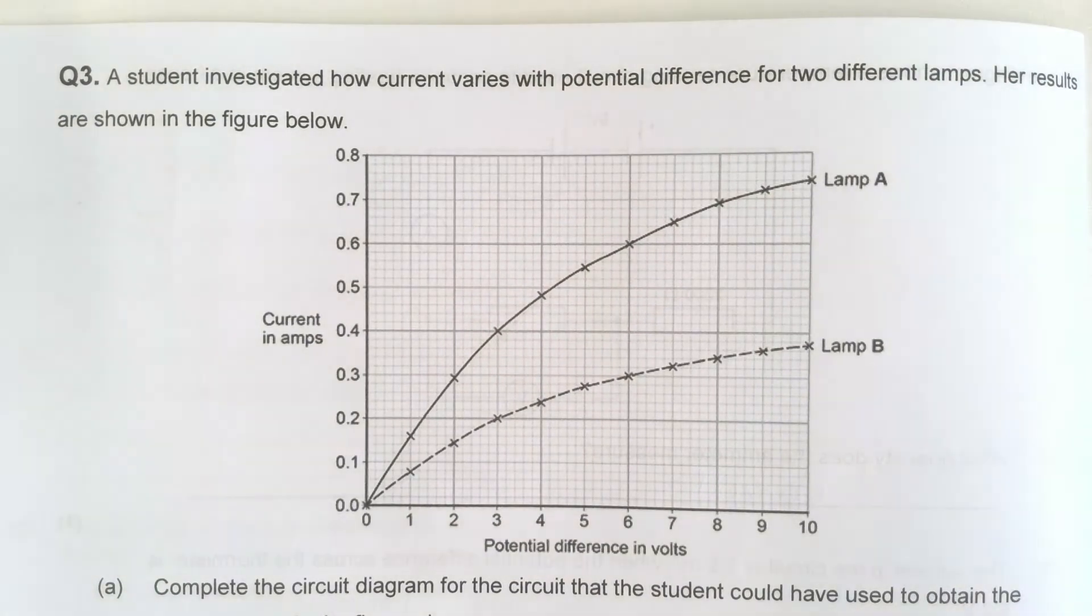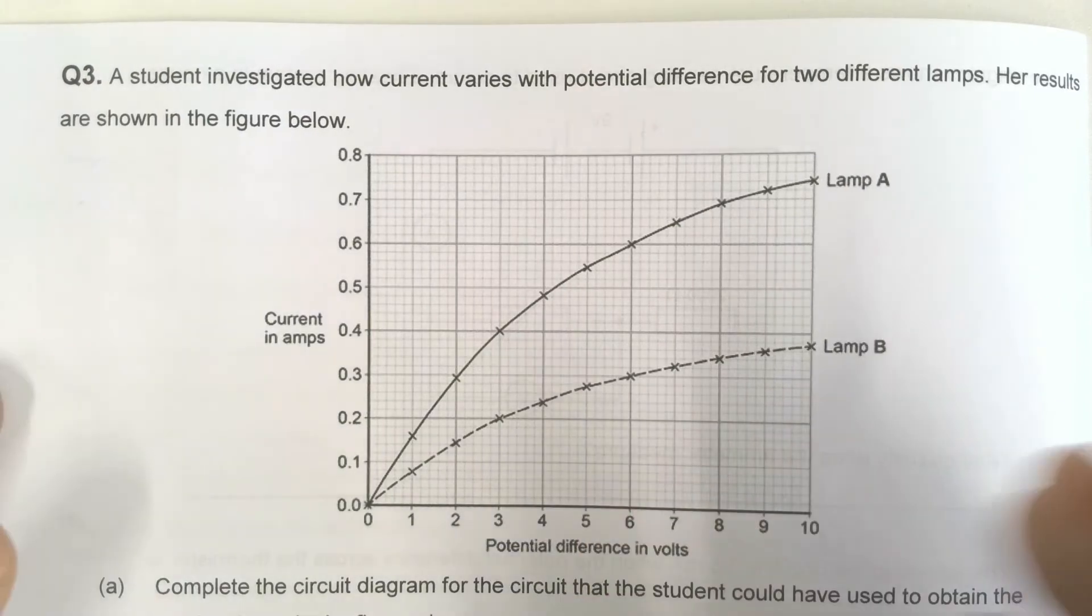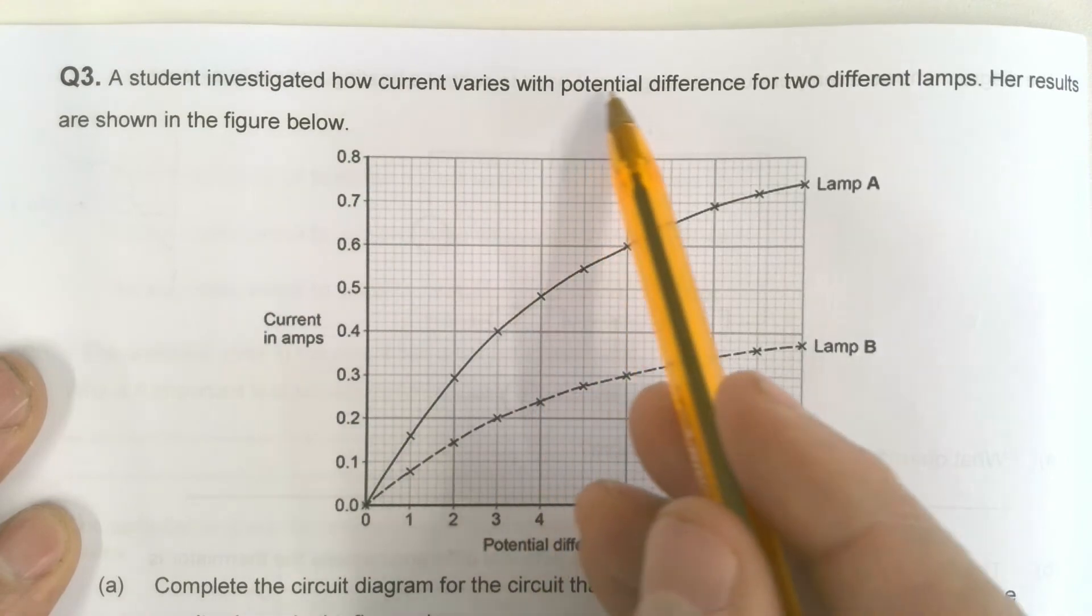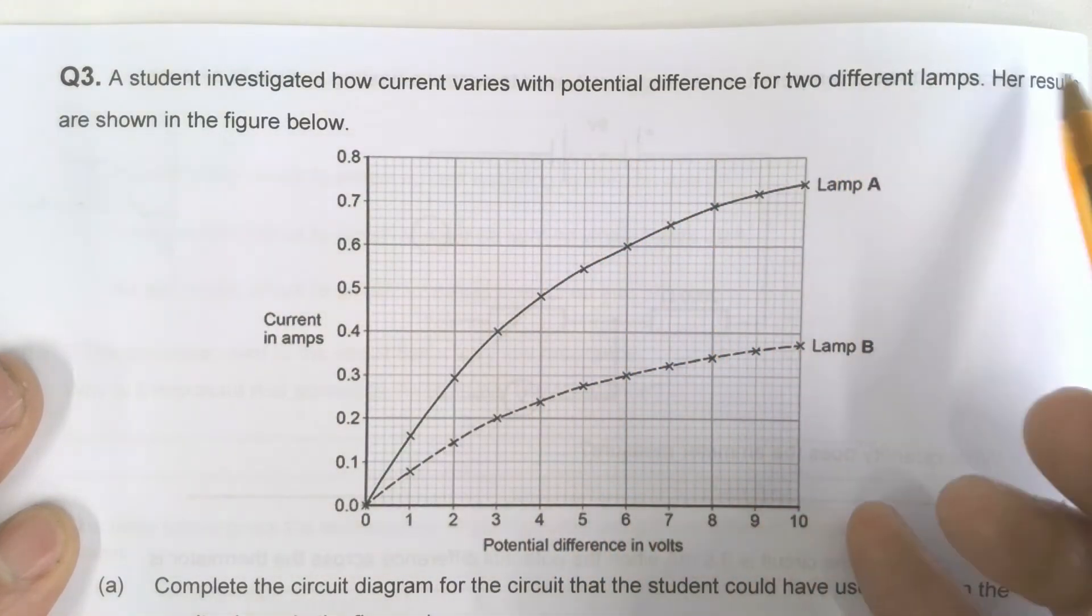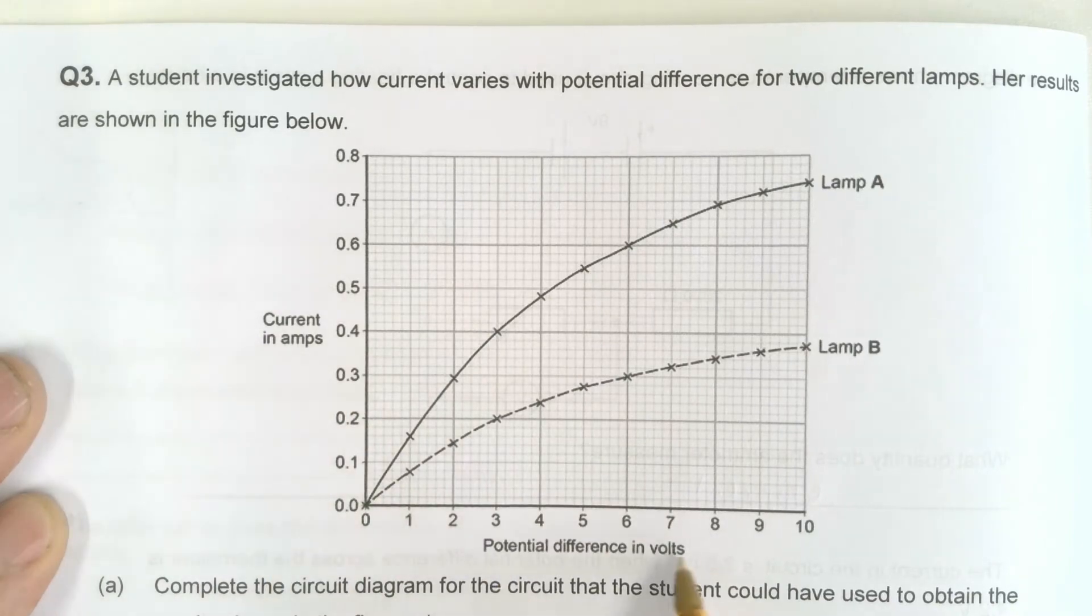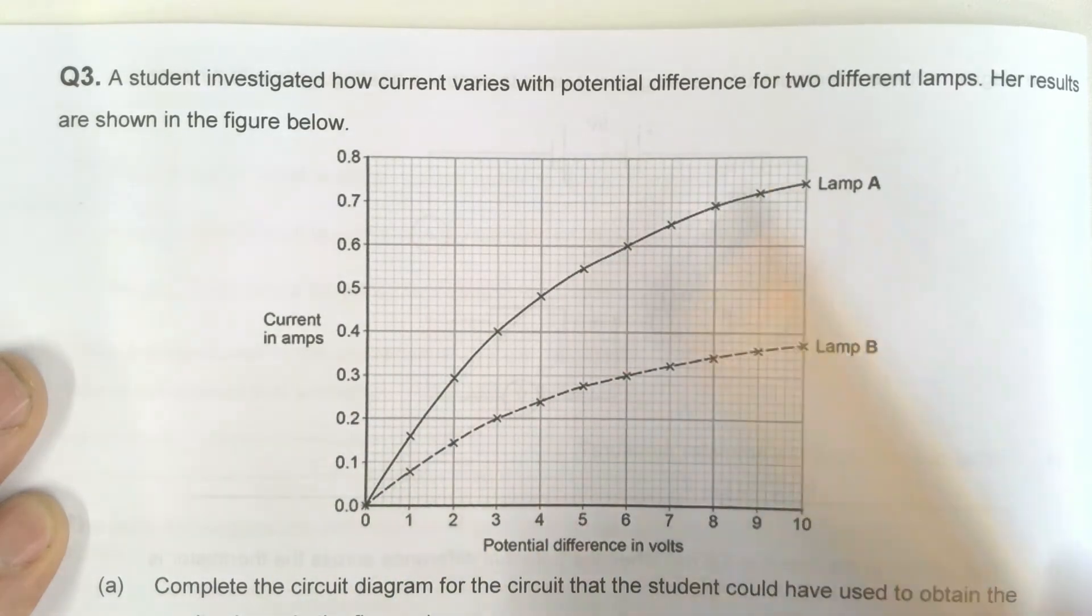Hello and welcome to this walking talking mock on the electric circuits high demand questions. Twelve questions to go with these videos, so we're on question three. A student investigated how current varies with potential difference for two different lamps. Her results are shown in the figure below with current in amps, potential difference in volts, lamp A and lamp B.